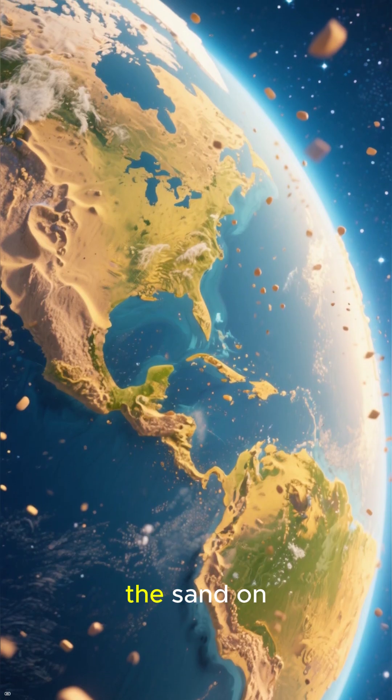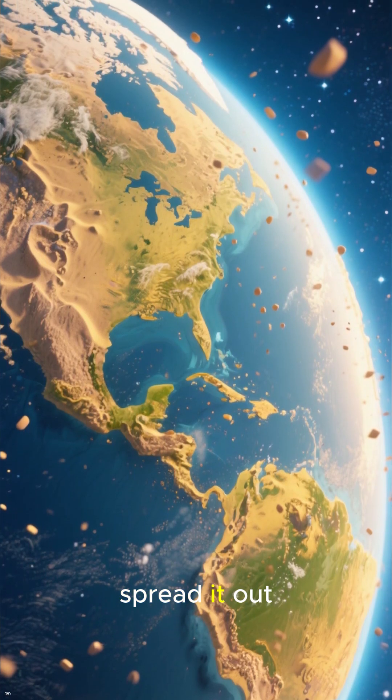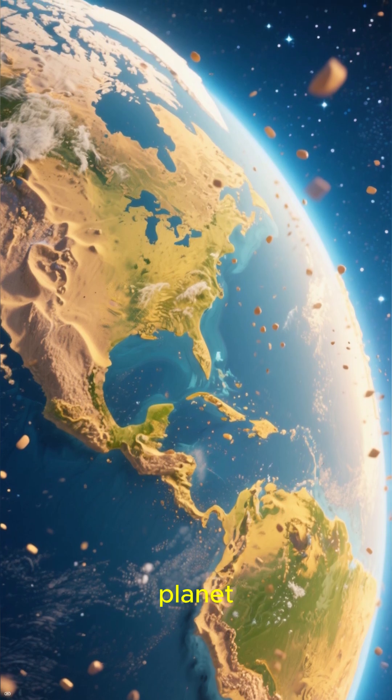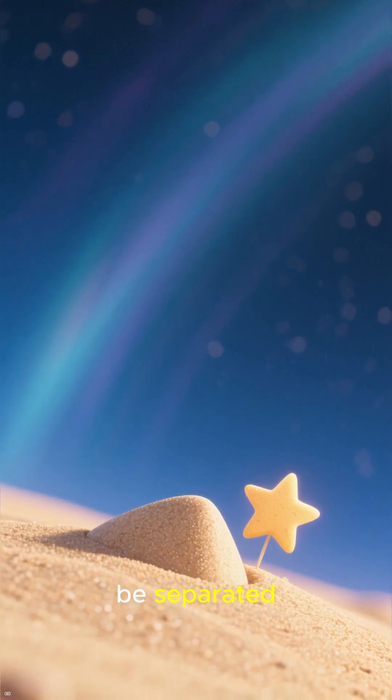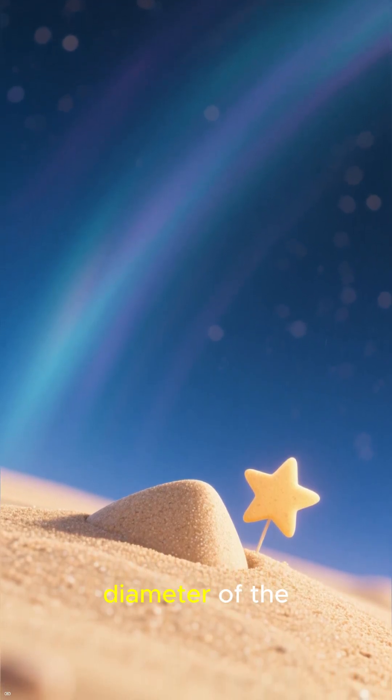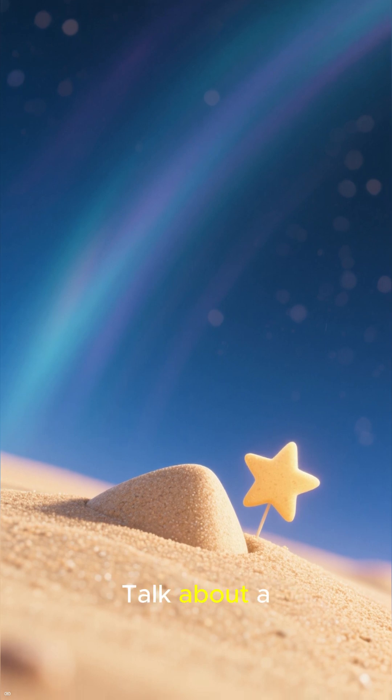This means that if you were to take all the sand on all the beaches on Earth and spread it out evenly over the surface of our planet, each grain of sand would still be separated by a distance greater than the diameter of the star it represents. Talk about a small world.